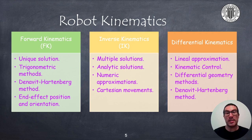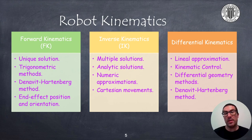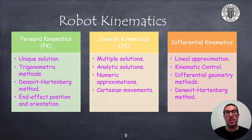Forward kinematics has a unique solution and can be obtained from trigonometric methods or from the Denavit-Hartenberg method. The details of these methods are explained in specific videos about robot kinematics. Forward kinematics plays a fundamental role to obtain the position and orientation of the robot end effector given some joint values.